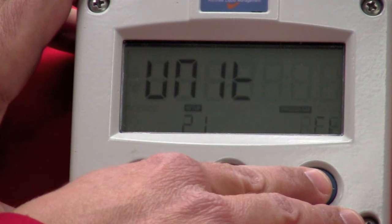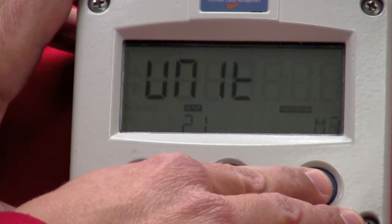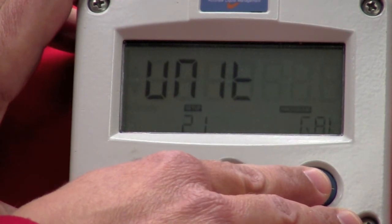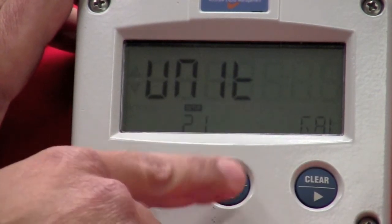You also have user-defined values that you can program in there. I just went past it, so all you need to do is just keep scrolling around. Back again to what you want. Barrels, gallons. Perfect. Hit Enter. I've locked that in.